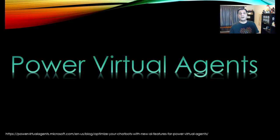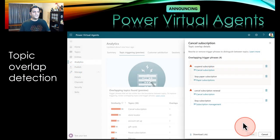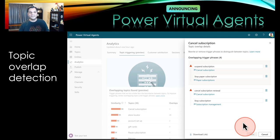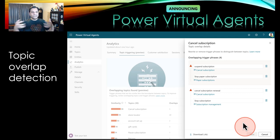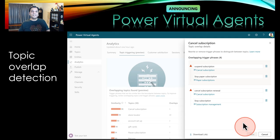Let's switch gears and talk about Power Virtual Agents, because there were quite a few announcements made there. One of the first things is the topic overlap detection, and this is huge. You've seen my videos in Power Virtual Agents showing how I go in and build topics and everything. Right now, there is no way to go in and say that the topic you made already exists somewhere else. So topic overlap detection was just unavailable, which required me to figure all of that out and see if I was duplicating topics.